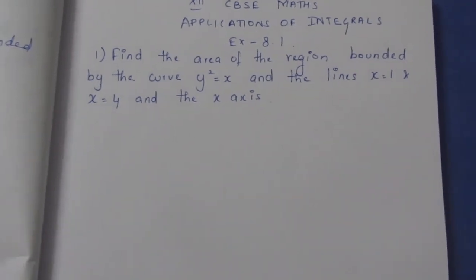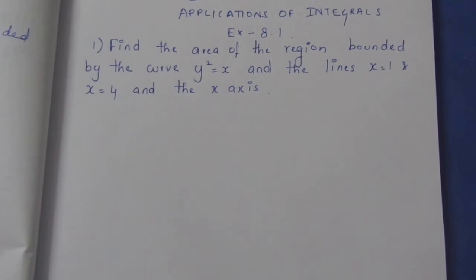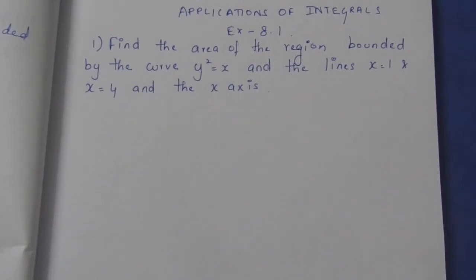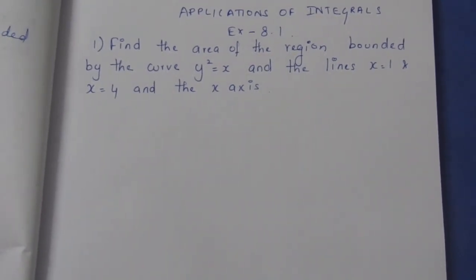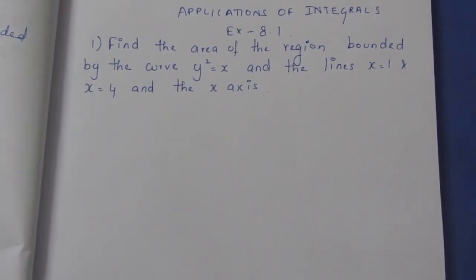The question is: find the area of the region bounded by the curve y² equal to x and the lines x equal to 1 and x equal to 4 and the x-axis.